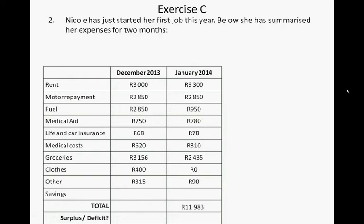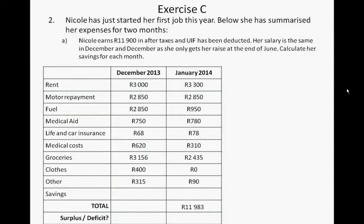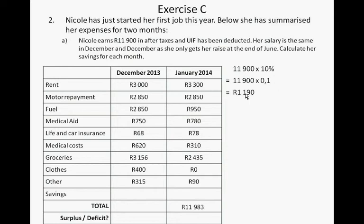This is Nicole. She started her first job this year. Below is a summary of her expenses over the past two months. She earns 1,900 Rand after taxes and UIF, and the salary is the same in December and January as she gets a raise at the end of June. So 10% of 1,900 Rand is 1,900 times 0.1, and that's 190 Rand. So the savings for the month is 190 Rand for both months.